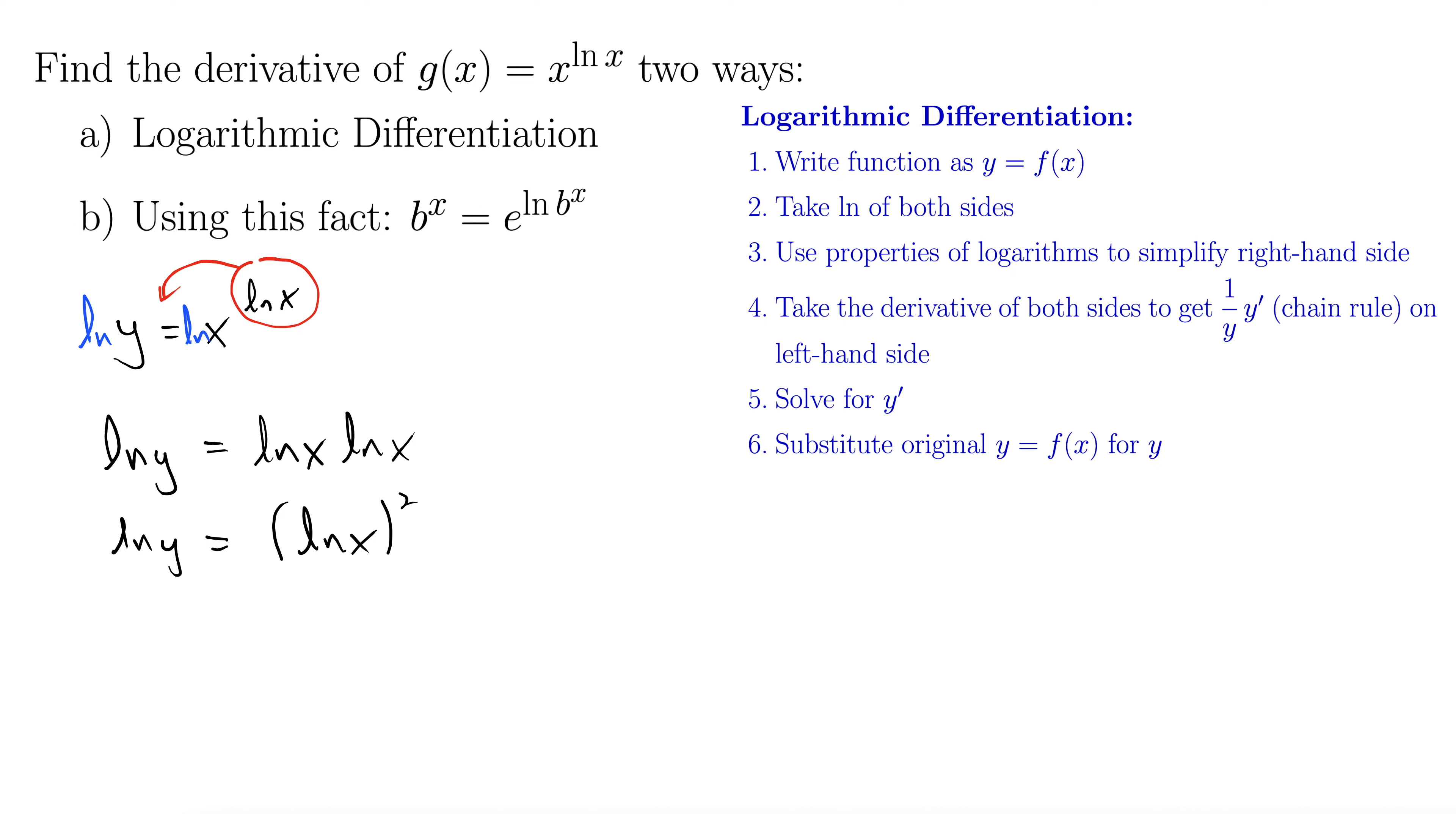Okay, step four, take the derivative of both sides. When we take the derivative of natural log of y, we get one over y, but we're taking the derivative with respect to x, not the derivative with respect to y.